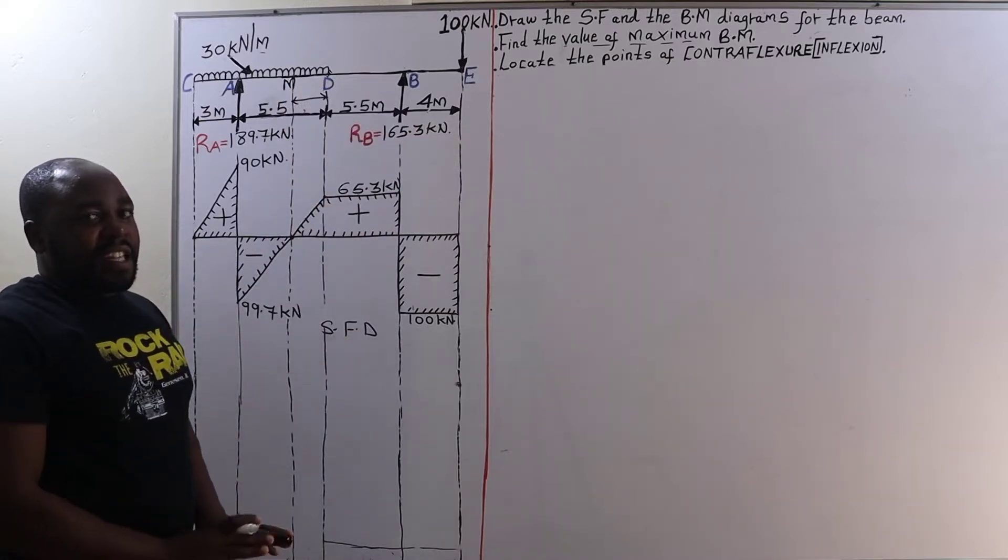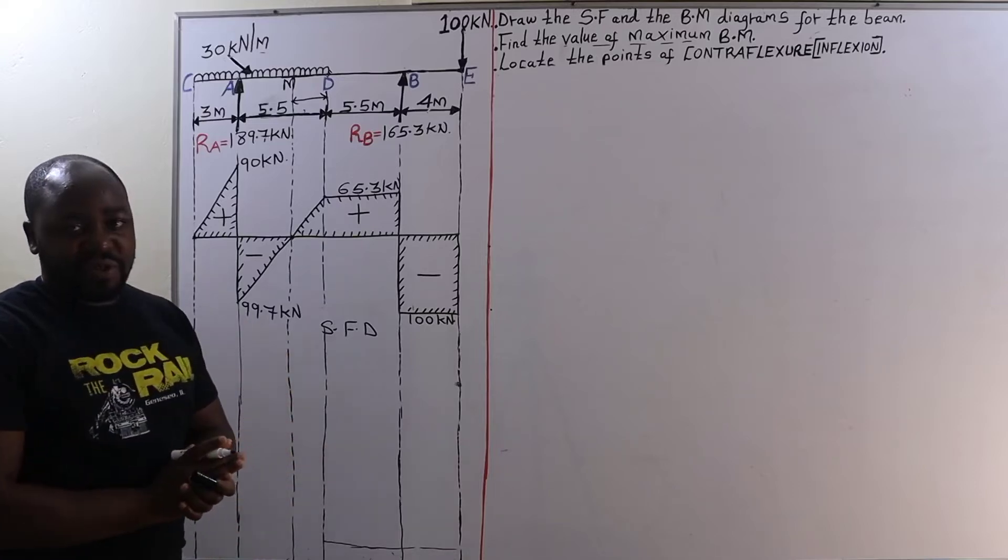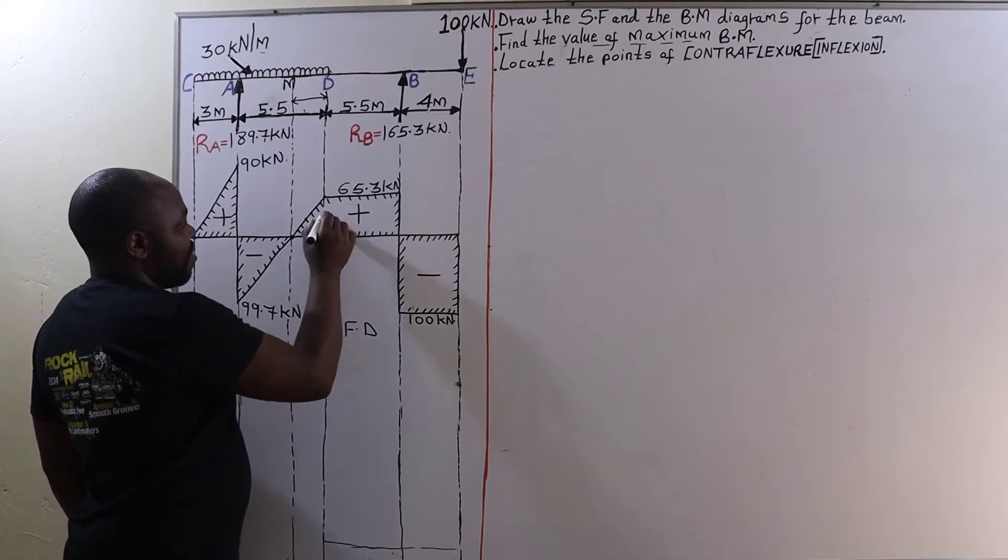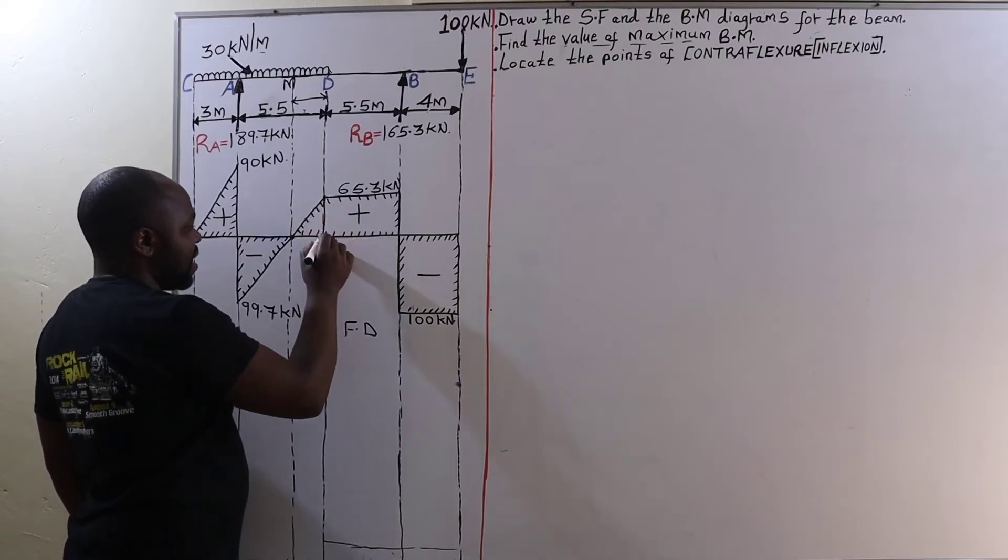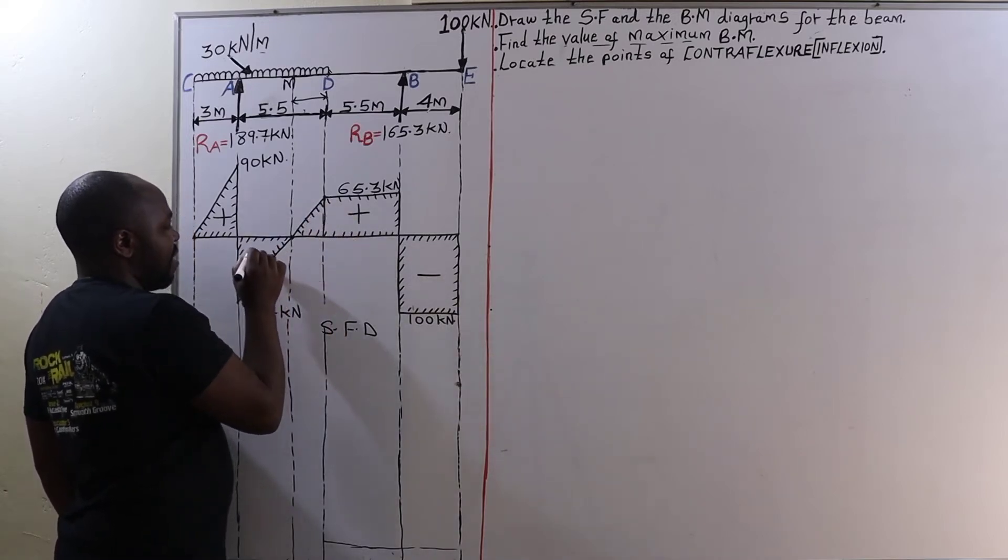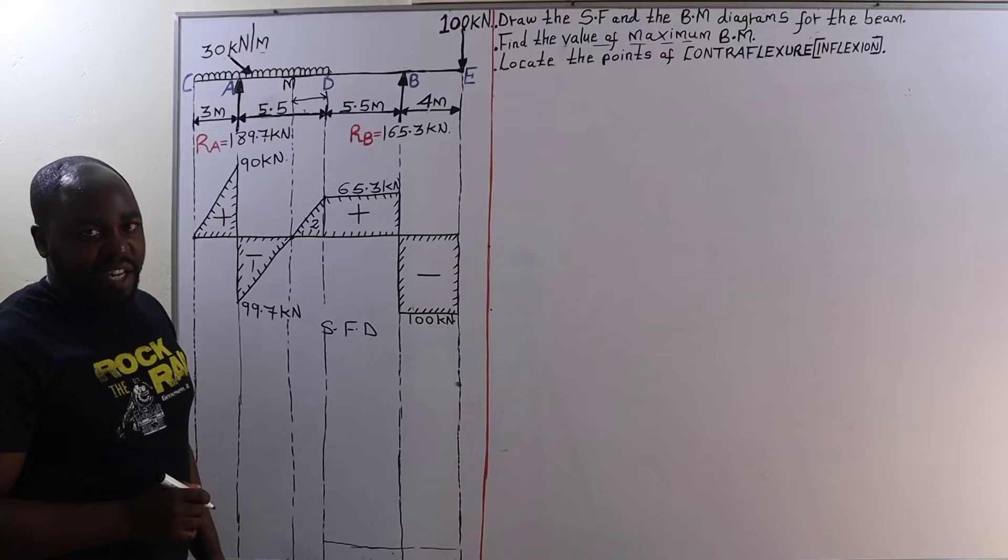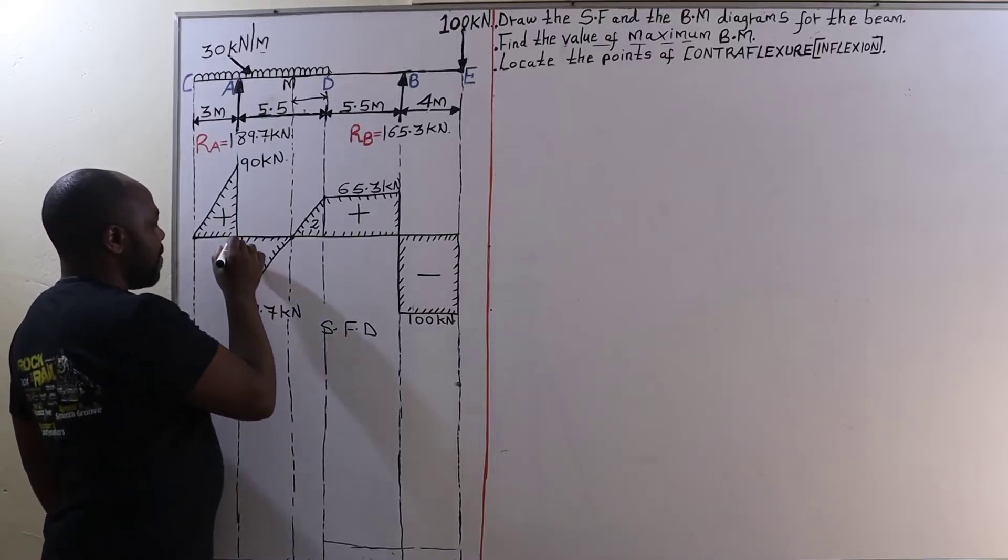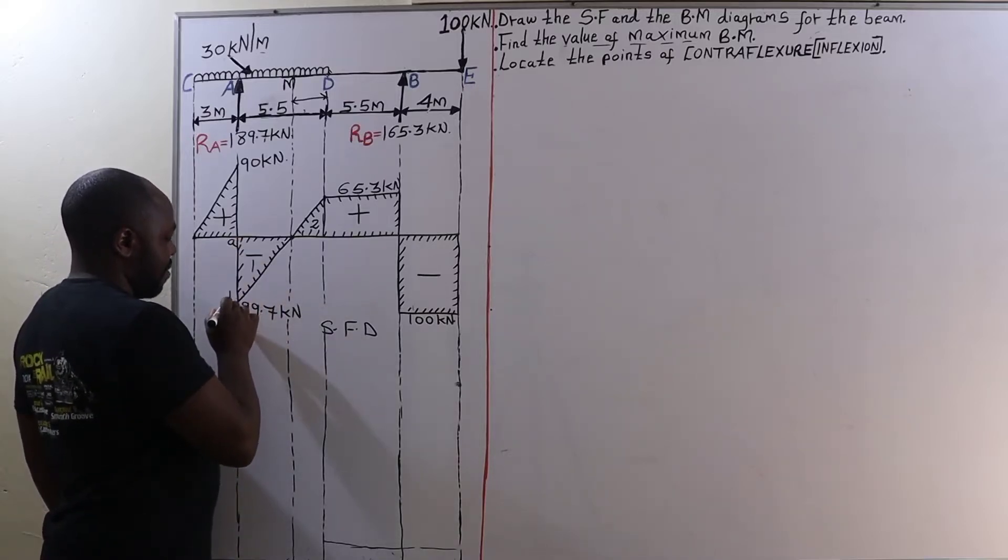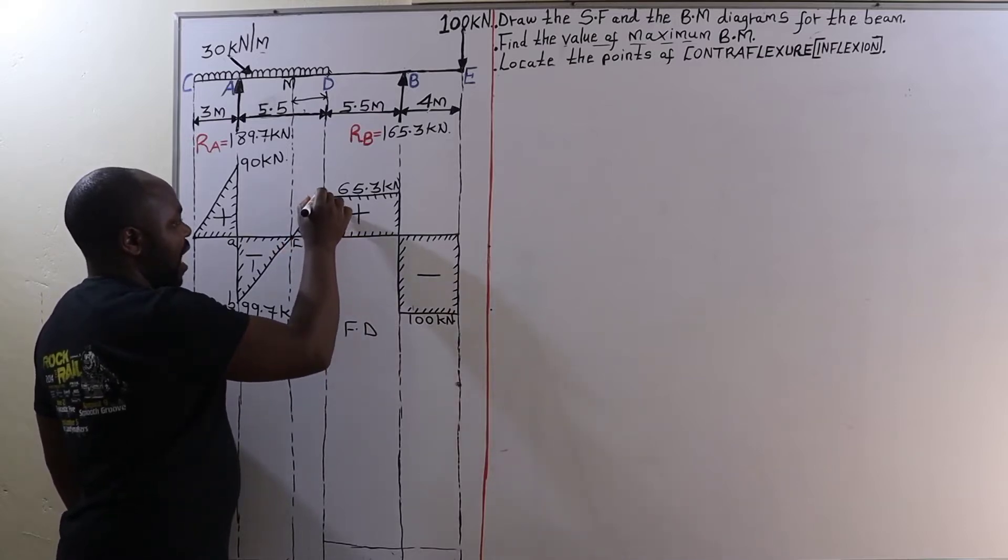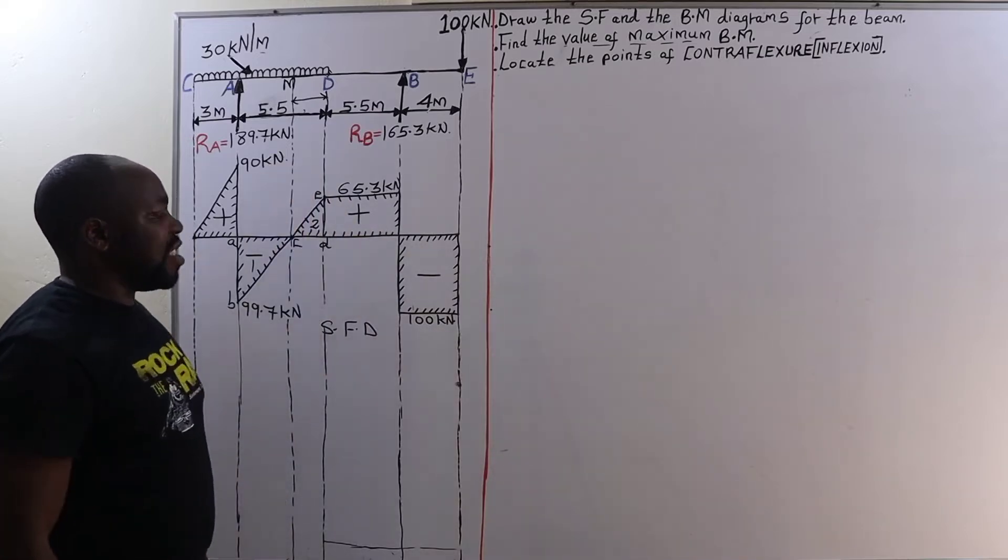And in this case, for us to get this distance we are going to use similarities because we have two right angled triangles here. We have triangle 1 and we have triangle 2 as well. Now if I call this point A and that point B, this point C, that point D, and point E.